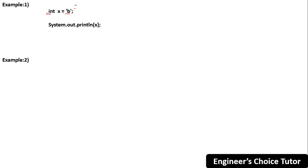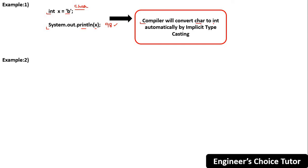Example 1: int x = 'b'. Here 'b' is a char type value being assigned to an int type variable. When we print x, the output will be 98 because the Unicode value for the character 'b' is 98. Internally, the compiler converts char to int automatically by implicit typecasting.